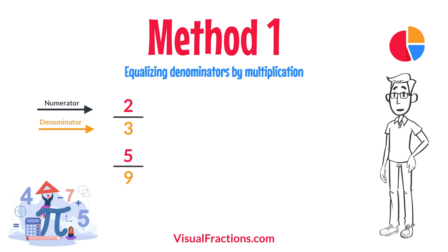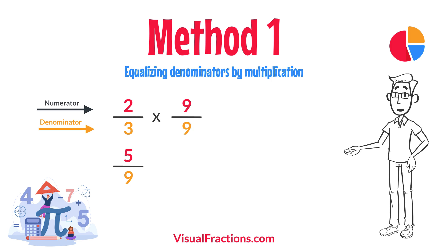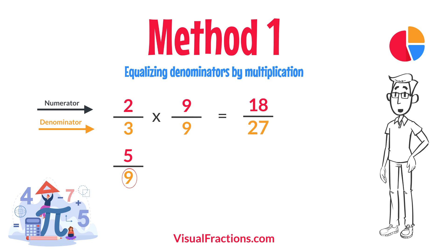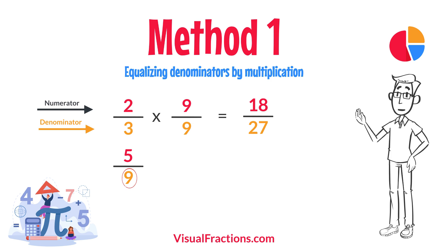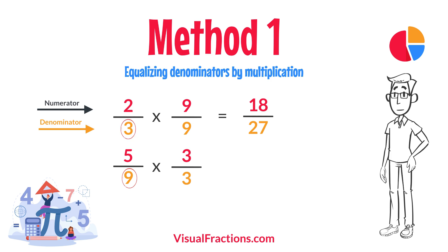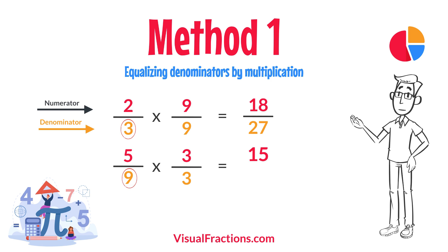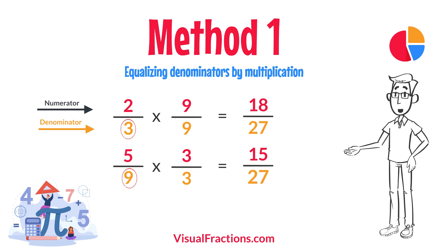For two-thirds, multiply both the numerator and the denominator by nine — the denominator of five-ninths. This gives us 18/27. For five-ninths, multiply both the numerator and the denominator by three — the denominator of two-thirds. This results in 15/27.